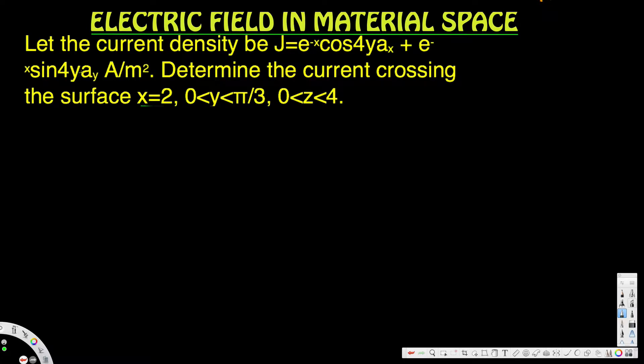sin 4y ay, amperes per meter squared. Determine the current crossing the surface x equals 2, where the y region is given by 0 to 5π/3 and z goes from 0 to 4.